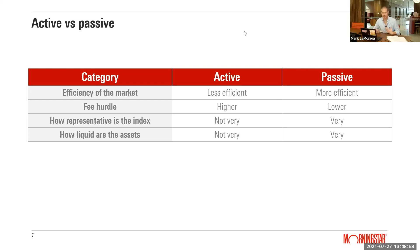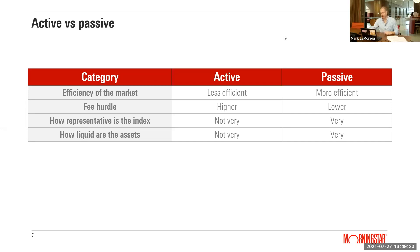Fixed interest is a perfect example where assets are not liquid, making it very hard for managers to reposition when indexes change. An active manager doesn't have to worry about that — even if they want to sell something, there's no mandate to sell as fast as possible; they can wait and slowly offload positions, which you can't do with passive because you have to match the index.